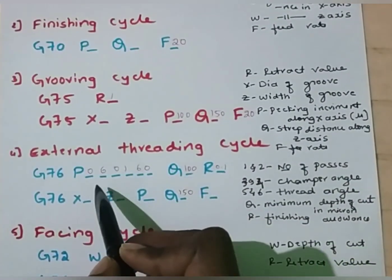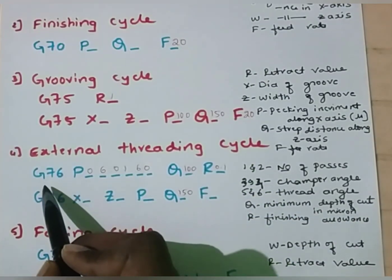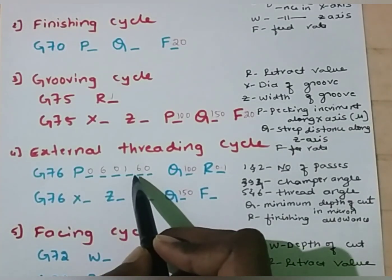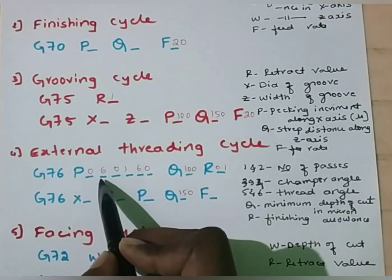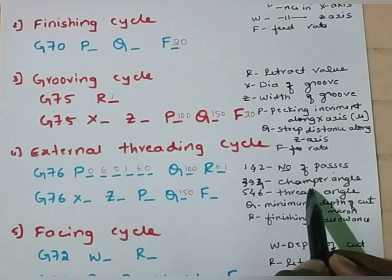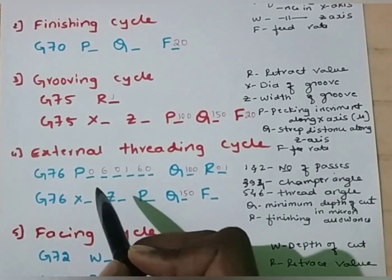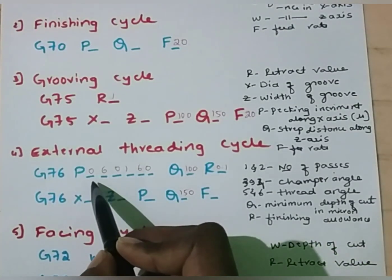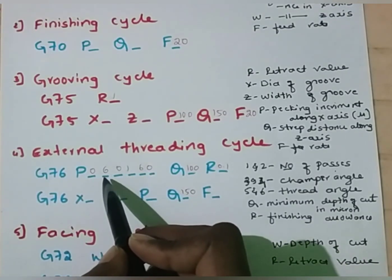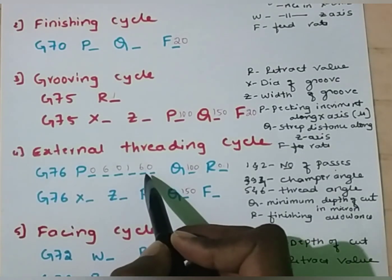The next one is external threading cycle. The syntax for external threading cycle is G76, which is the threading cycle, followed by P with six digits: the first and second digit indicate number of passes, third and fourth digit indicate chamfer angle, and fifth and sixth digit indicate thread angle. In this problem, I am going to assume the P-value as 060160, where 06 is the number of passes (six passes), chamfer angle is one degree, and thread angle is 60 degrees.